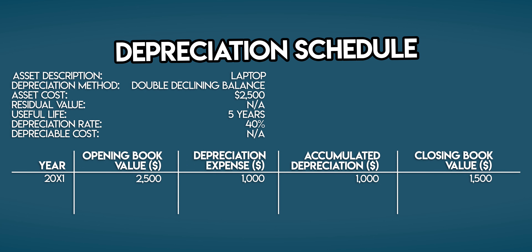Your closing book value in year 1 becomes your opening book value in year 2. Your depreciation expense is your double declining balance depreciation rate multiplied by your opening book value at the start of the year — so that's 40% multiplied by $1,500, which is $600. Accumulated depreciation is $1,600. And your closing book value is $1,500 minus $600, which is $900.